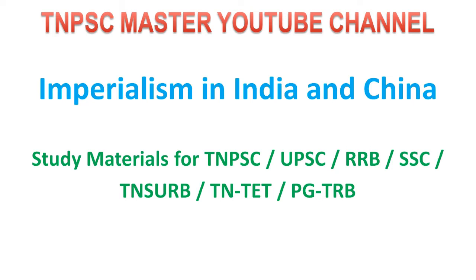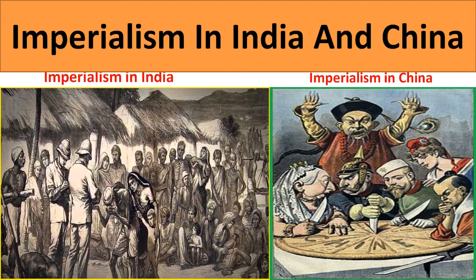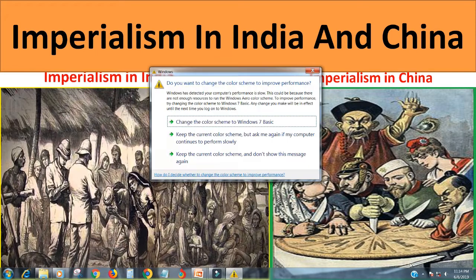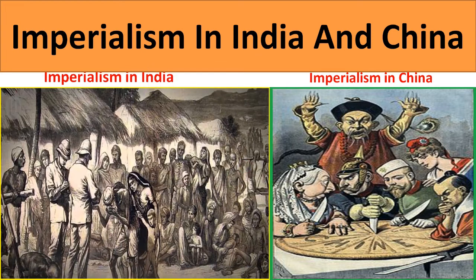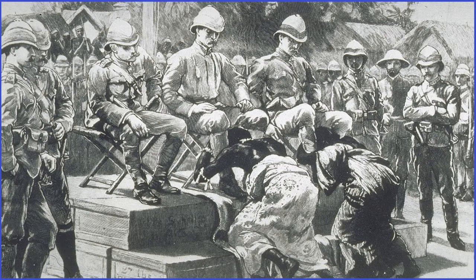The European nations followed this policy during 1763 to 1870 AD. The term colonialism refers to the policy of acquiring and maintaining colonies for exploiting both natural and human resources. The European countries adopted this policy during 1492 to 1763. The European countries such as England, France, Spain and Portugal were initially interested only in colonialism. They adopted this policy in order to acquire and maintain colonies for the purpose of economic exploitation.